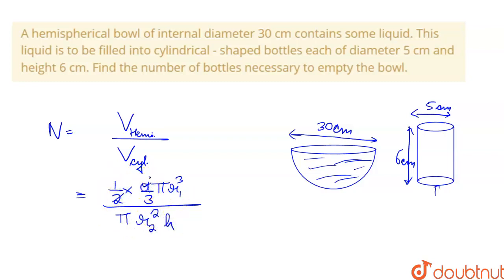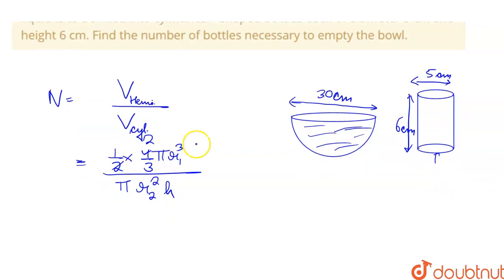Okay. So this 2 cancels from 2. Pi from pi cancel. So what do we have? Simply 2 r1 cube upon 3 r2 square h.